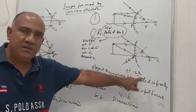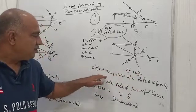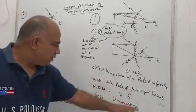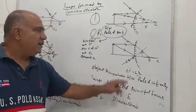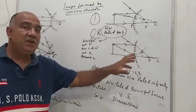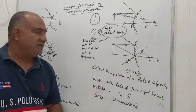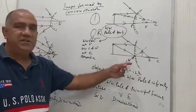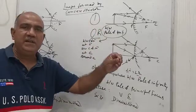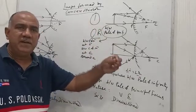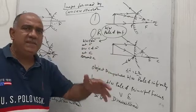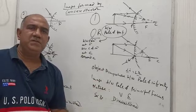When the object is anywhere between the pole and infinity, the image will be found between the pole and the principal focus. The image is virtual and erect — virtual because the light rays only appear to meet, not actually meeting. The size is diminished. A convex mirror can never make a magnified or equal-size image; the size of the image will always be less than the size of the object, irrespective of where you keep the object.